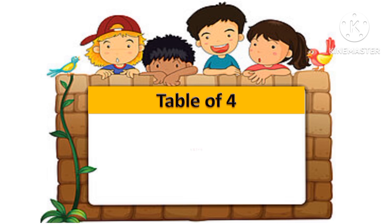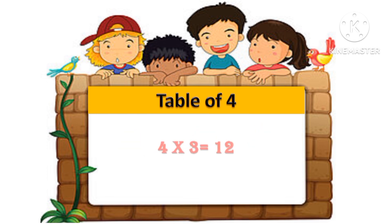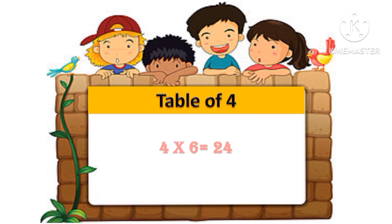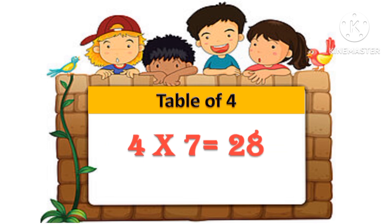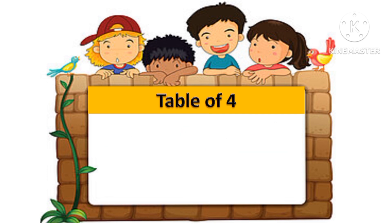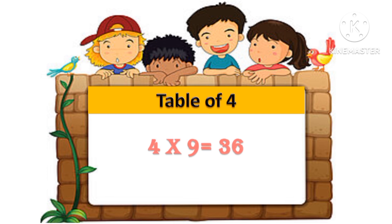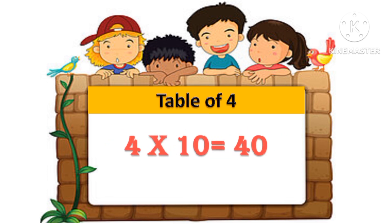Table of 4: 4 one's are 4, 4 two's are 8, 4 three's are 12, 4 four's are 16, 4 five's are 20, 4 six's are 24, 4 seven's are 28, 4 eight's are 32, 4 nine's are 36, 4 ten's are 40.